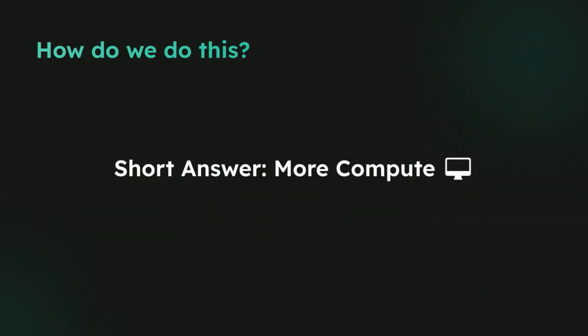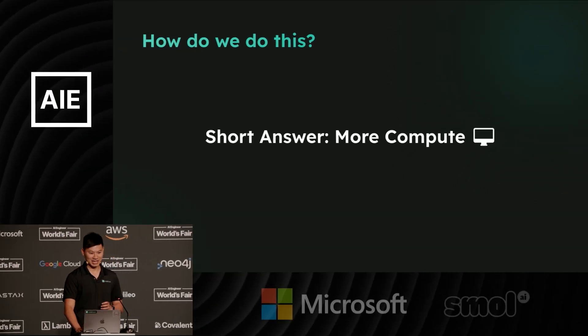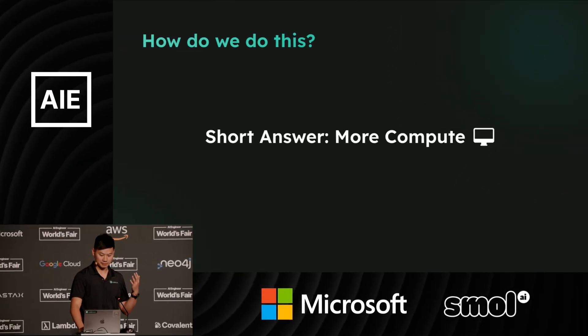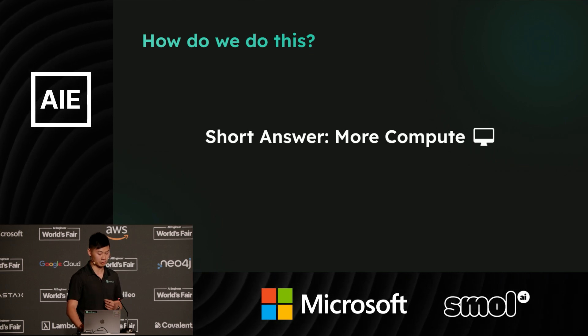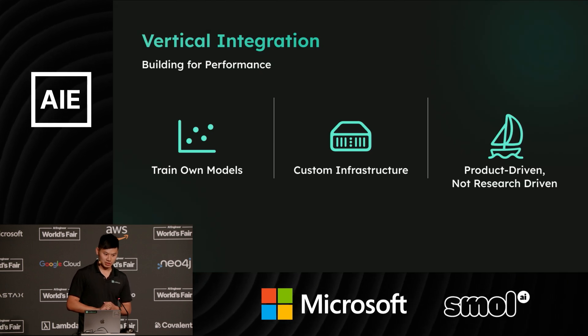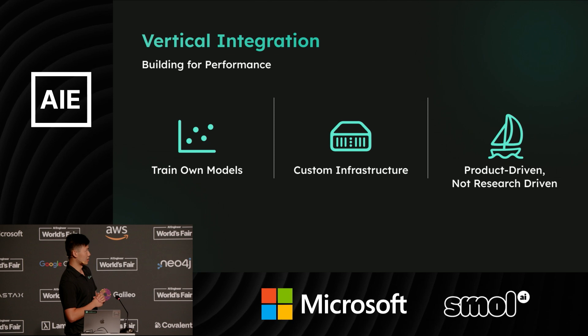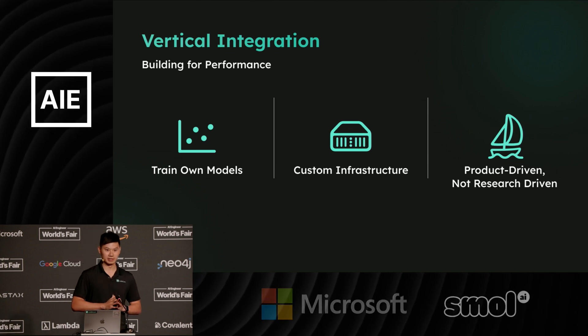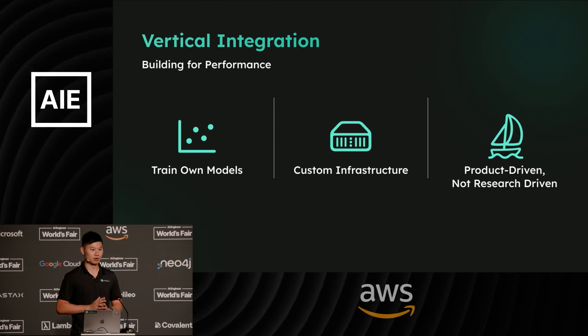The question becomes: how do we actually get this kind of best-in-class retrieval? The very short answer is we throw more compute at it — but of course that can't come with absurd financial cost. How do we actually do this in production without incurring an unreasonable cost? This goes back to a little bit of Codium's secret sauce: we are vertically integrated. What this means is we train our own models, so these are custom to our own workflows.